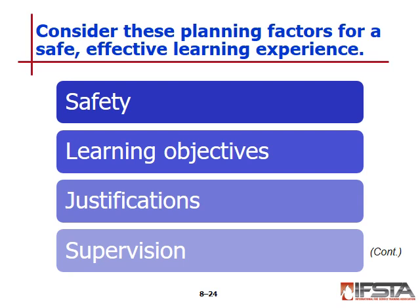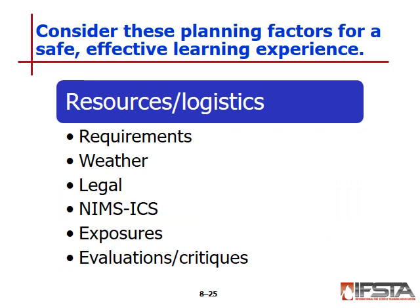Consider allotment of resources and supervision criteria. Training must be supervised by the company officer or personnel with appropriate training and experience. Large evolutions may require more supervision — NFPA 1403 recommends a student-to-instructor ratio of one to five during live fire training. Resource and logistics plans must provide all resources needed, especially critical for remote sites. Ensure you have adequate water, appropriate apparatus and tools, rest and rehabilitation, and sufficient time.